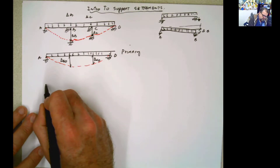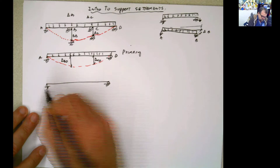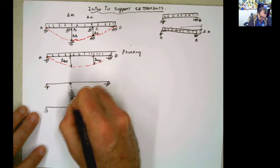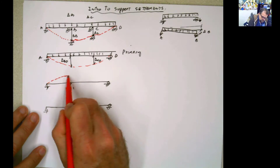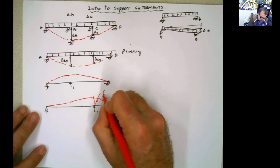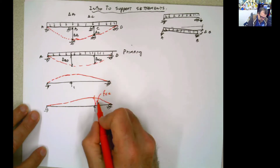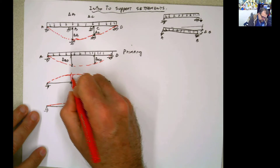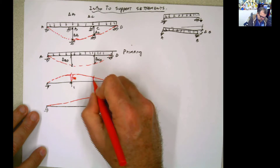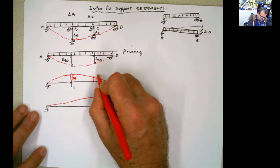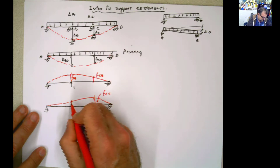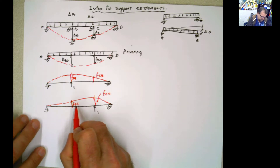You create two virtual structures: one with a unit force applied at B, and one with a unit force applied at C. The flexibility coefficient FBB is the deflection at B due to a unit load at B. FCC is the deflection at C due to a unit load at C. FCB is the flexibility coefficient at C due to a load applied at B, and FBC is the flexibility coefficient at B due to a load applied at C.